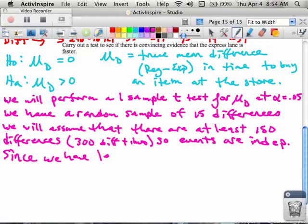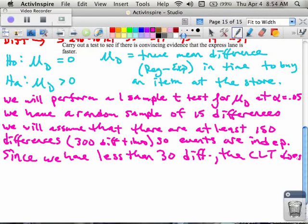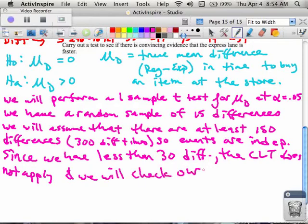Since we have less than 30 differences, the CLT does not apply, and we will check our data.